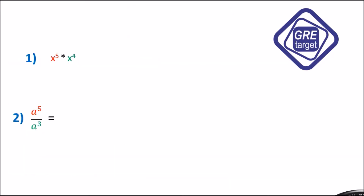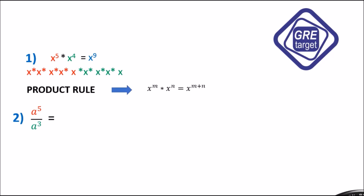Let's solve examples. Example 1: x raised to 5 into x raised to 4. Without the rule, we'd multiply it out 5 times x and 4 times x to get x raised to 9. But using the product rule, we simply write x raised to 5 plus 4, which equals x raised to 9. Both answers are the same, but the second method is much easier.